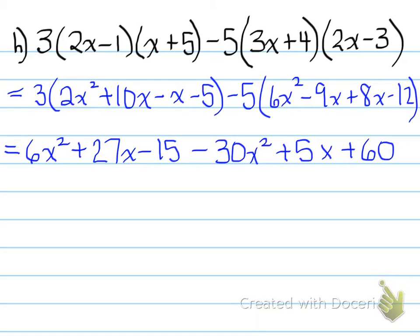We're not done yet, though. So we need to collect all the like terms. So by collecting the like terms, we get negative 24x squared plus 32x plus 45 as our final answer. And, folks, that's the end of it. That's the end of the videos for this section, 5.1. See you in 5.2. Have a numerical day.